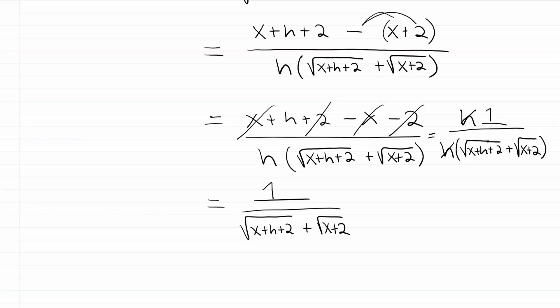So basically, that is it. You may be concerned about having square roots in the denominator, but it's actually going to be okay here. The reason you're learning the difference quotient is that it's an algebra skill necessary for calculus. What we just did will actually make our lives very easy when performing the next step in calculus. Even though we normally wouldn't want to leave radicals in the denominator, in calculus you'd be able to carry this problem further and rationalize it later if needed.